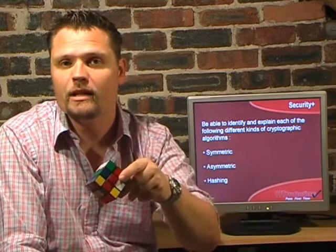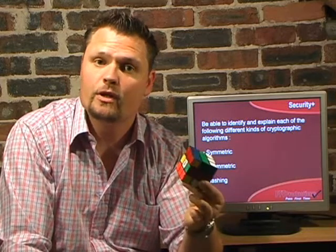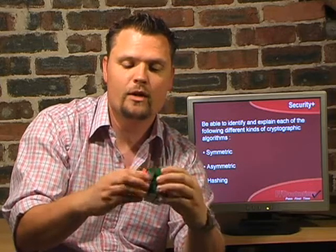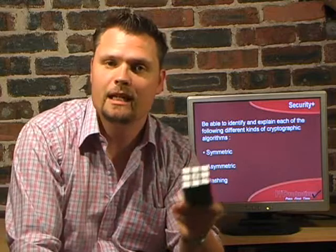So when it does arrive at the other end, whether it's been intercepted or not, the person with the key simply reverses that algorithm: bottom clockwise one, right anti-clockwise one, left back one, right forward one. And there we are — it's been decrypted and you can read it as a plain text document once again. And that is exactly the principle of how symmetric key algorithms work.